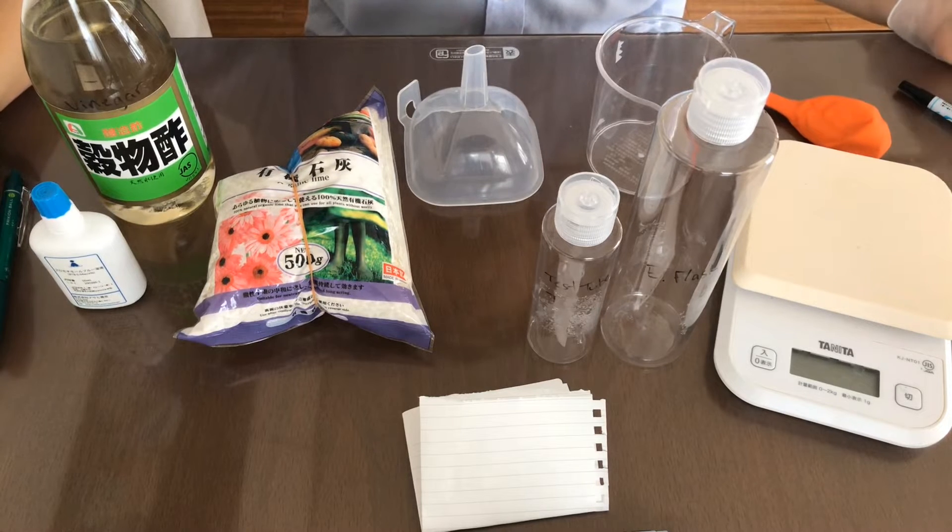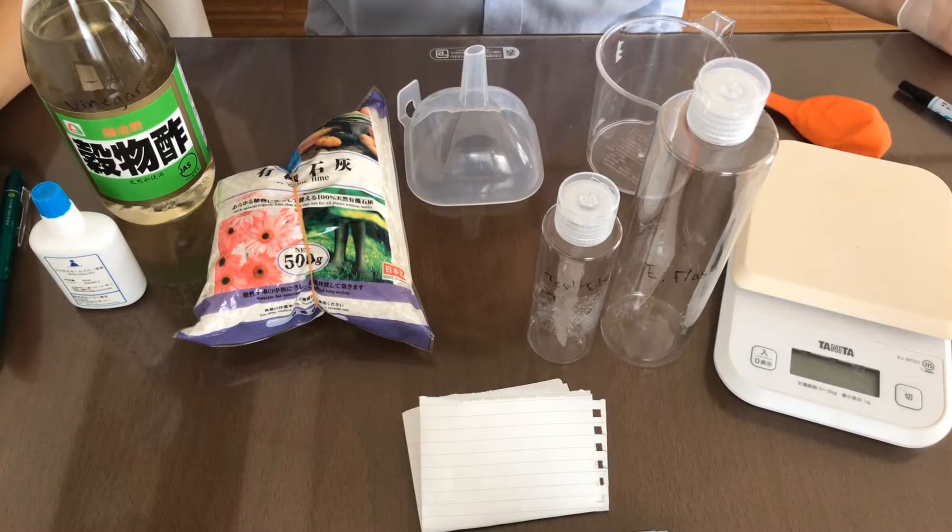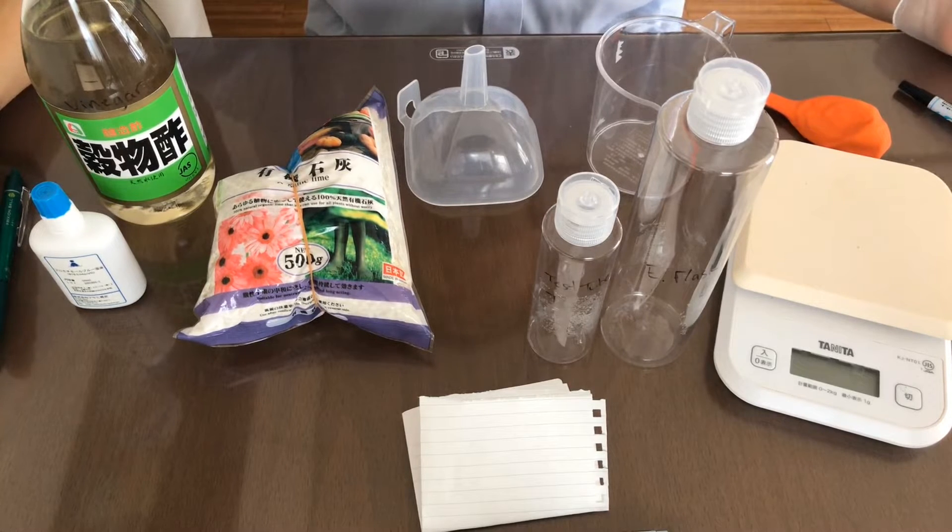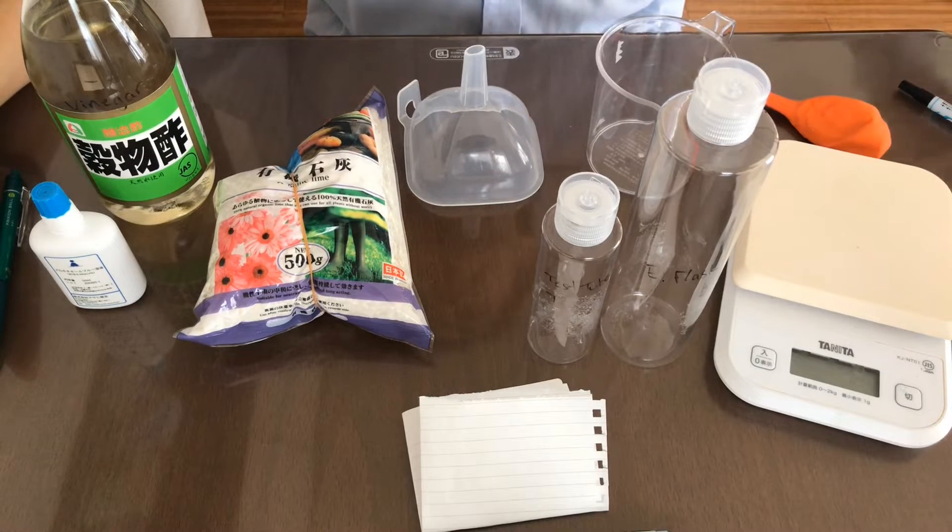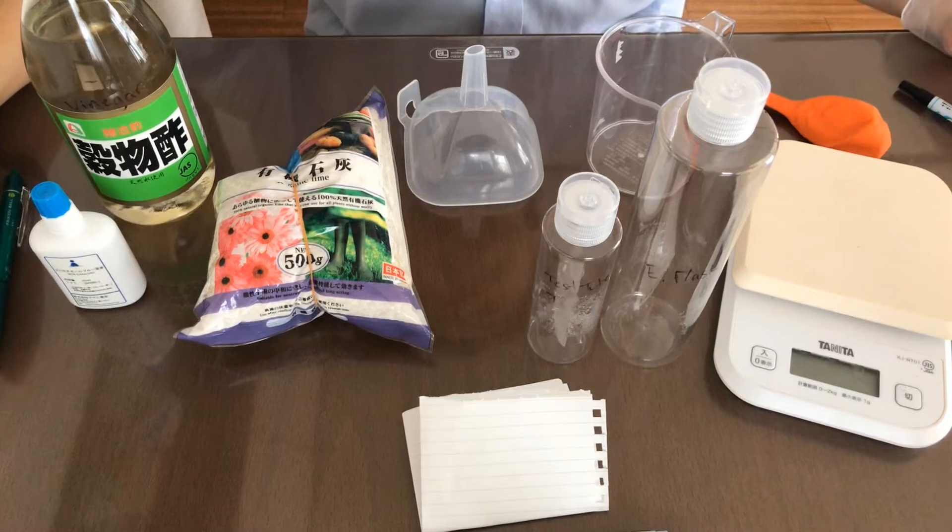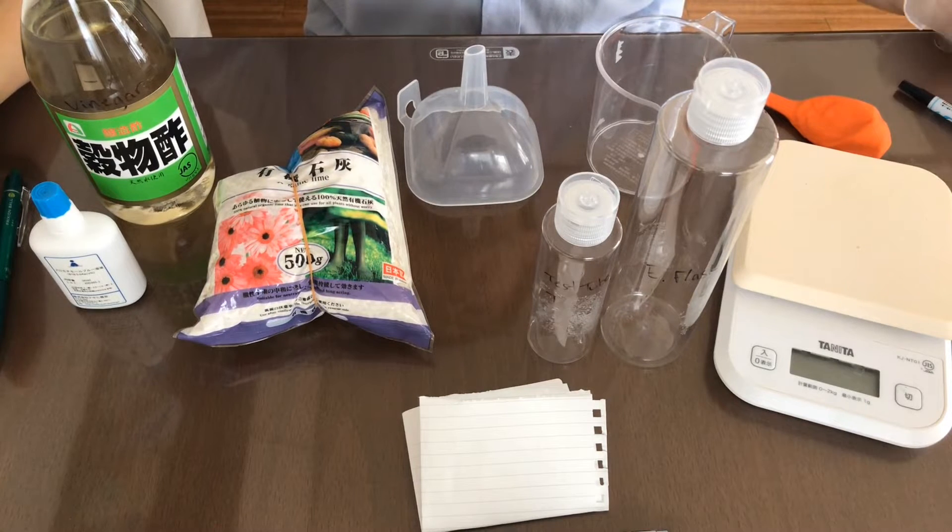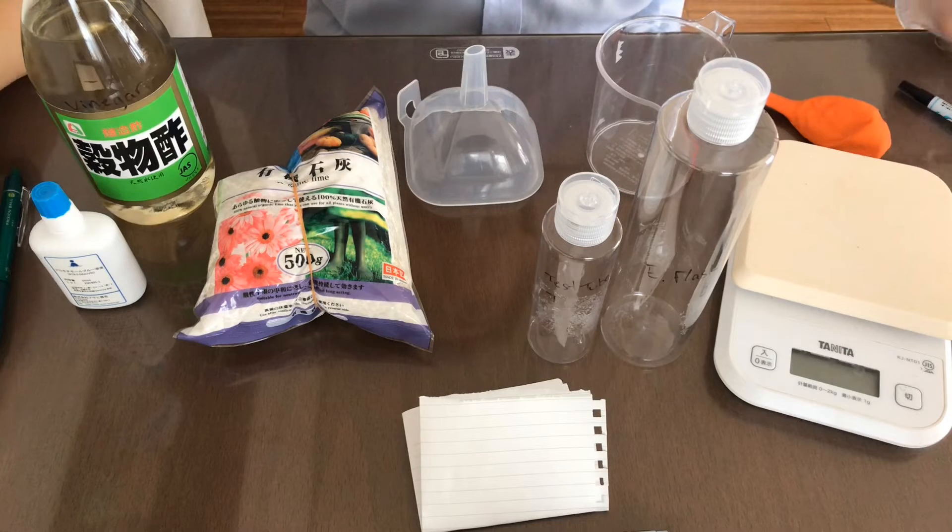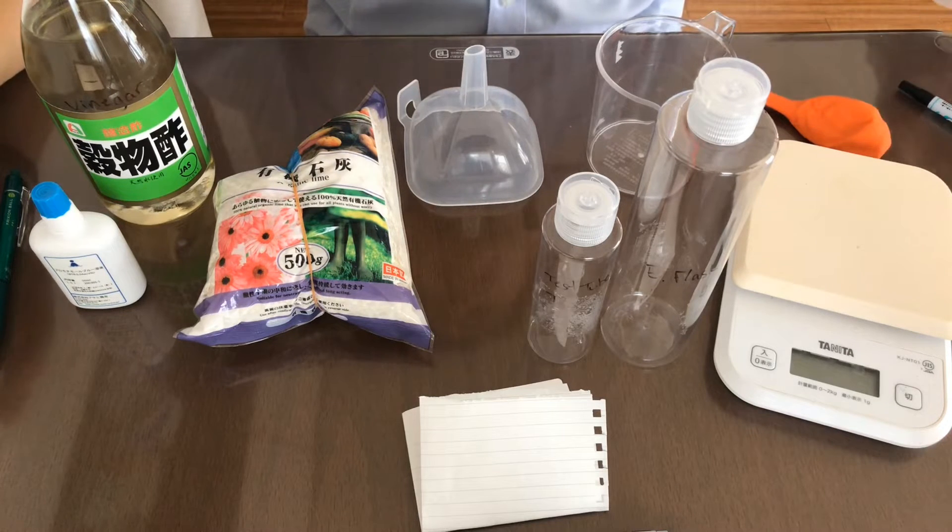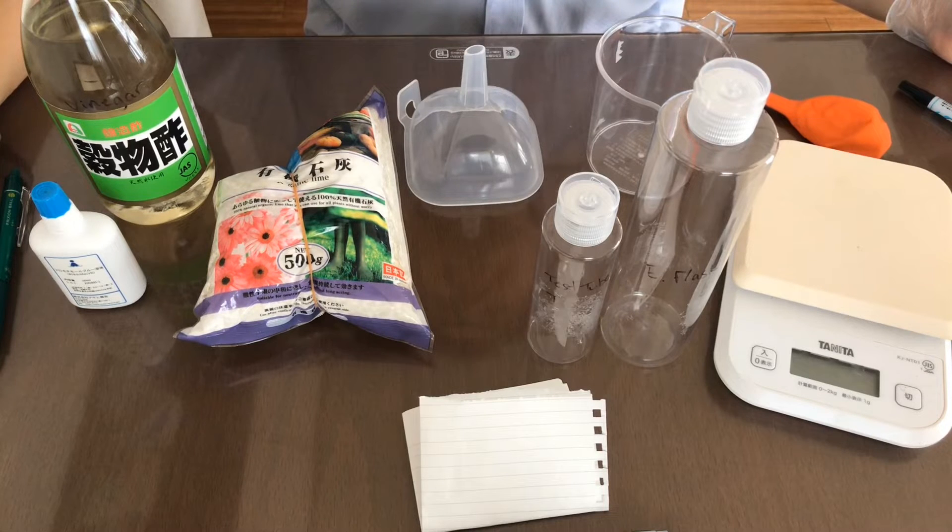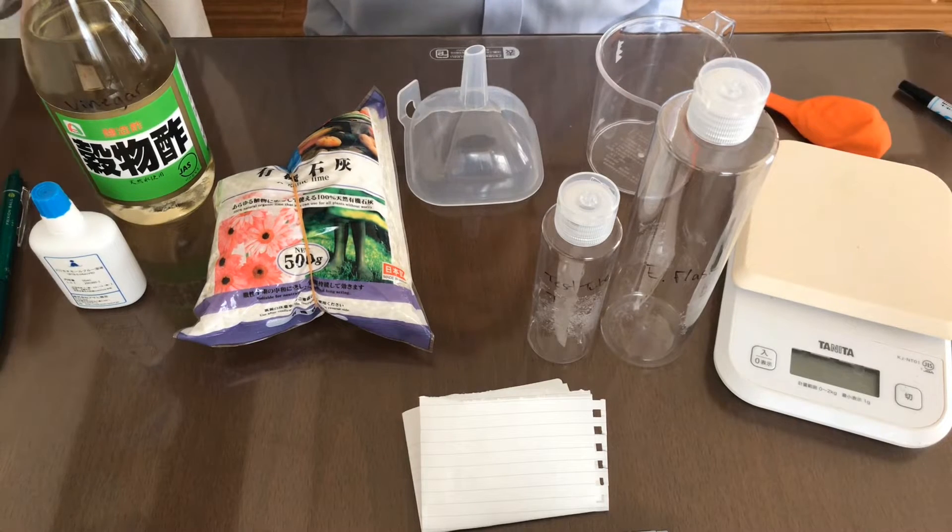In the previous lesson you learned about how energy flows in an environment. Matter, which is made up of atoms, also moves through the environment, but instead of flowing through the environment like energy does, matter moves in cycles. This lab is going to demonstrate a part of that.